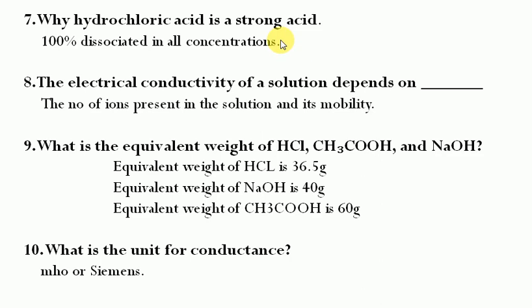What is the equivalent weight of HCl, acetic acid, and sodium hydroxide? Equivalent weight of HCl = 36.5 g. Equivalent weight of NaOH = 40 g. Equivalent weight of acetic acid = 60 g. Using these values, you can calculate the amount (weight) by multiplying normality by equivalent weight.